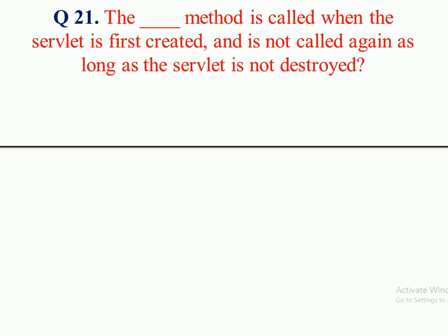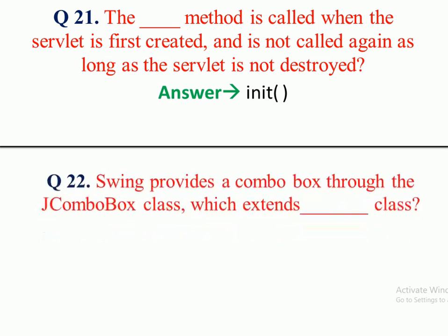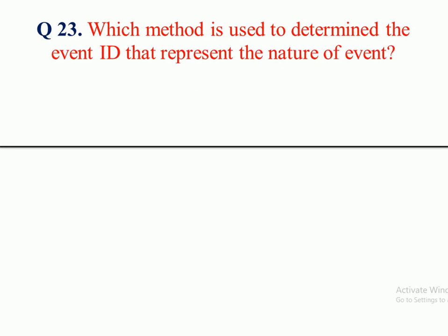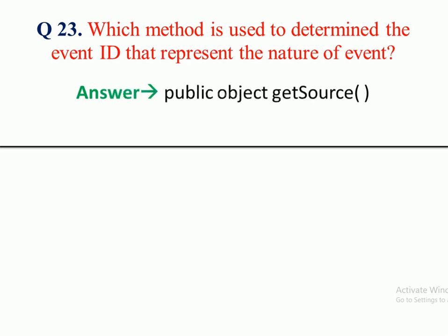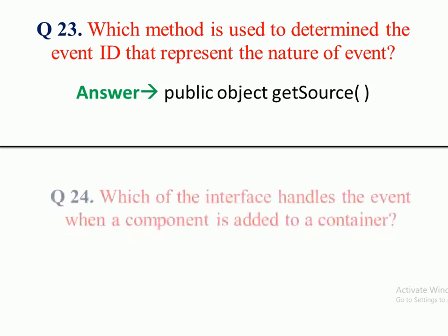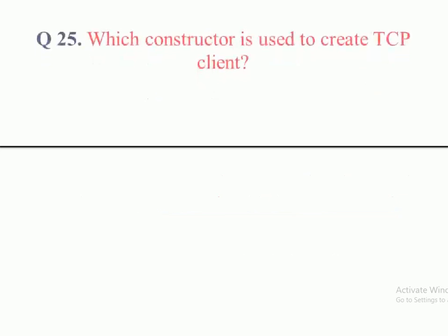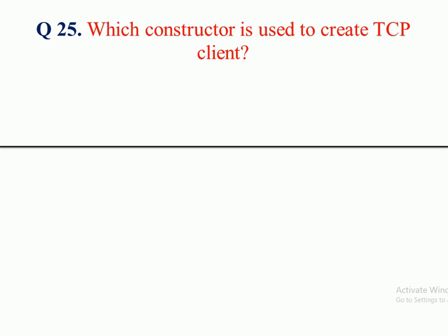Question 21: The init method is called when the servlet is first created and is not called again as long as the servlet is not destroyed. Answer: init method. Question 22: Swing provides a combo box through the JComboBox class, which extends which class? Answer: JComponent class. Question 23: Which method is used to determine the event ID that represents the nature of an event? Answer: public Object getSource method. Question 24: Which interface handles the event when a component is added to a container? Answer: ContainerListener. Question 25: Which constructor is used to create a TCP client? Answer: Socket(String host, int port) constructor.